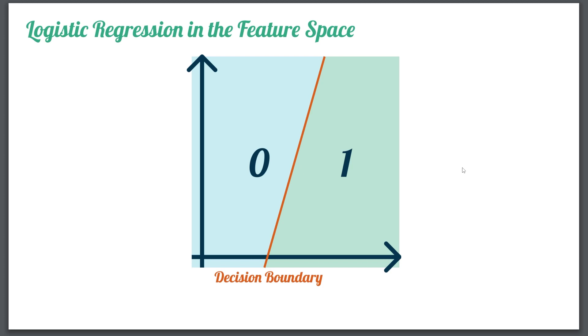And here you can see kind of a graphical illustration of this. Assume that on the x-axis here, you have one feature, maybe height. And on the y-axis, you have another feature, maybe weight. So for each observation that lies within this side here, then you predict a zero. And for each observation that lies within this side here, you predict a one.